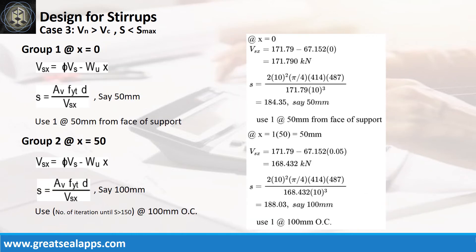For group 1 at x equals 0, the web strength at x equals 0 is 171.79 kN, with spacing at 184.35 mm, use 1 at 50 mm.